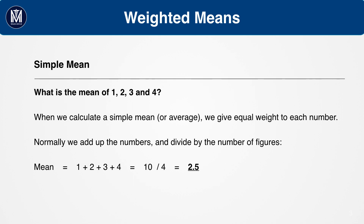Let's start off with the basics of basics: simple means. What is the mean of 1, 2, 3, and 4? When we calculate a simple mean, or average, we give equal weight to each number. Normally, we add the numbers up and divide by the number of figures. So you would add 1 plus 2 plus 3 plus 4 and divide by 4, which equals 2.5. Easy enough.